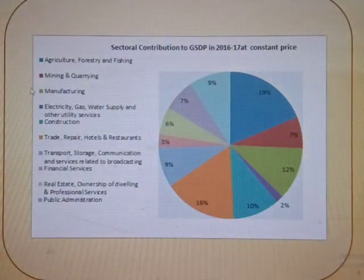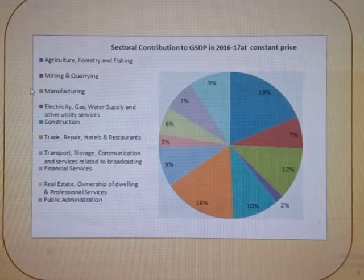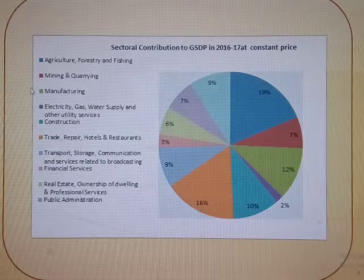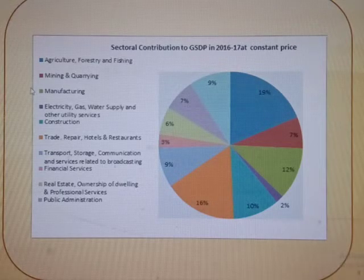Agriculture, mining and quarrying are the major contributing sectors to Assam's GSDP.